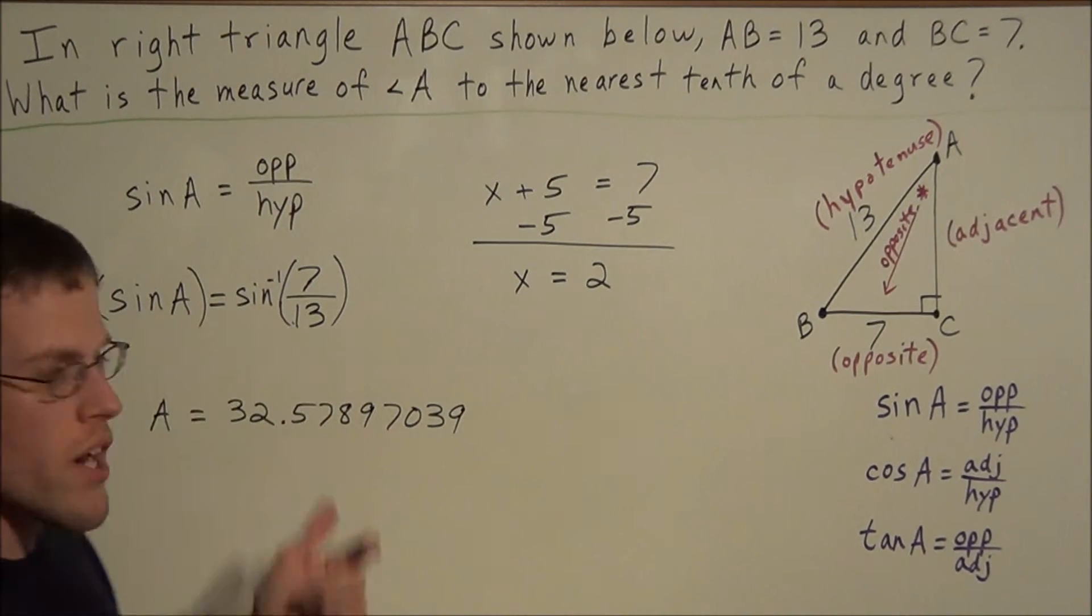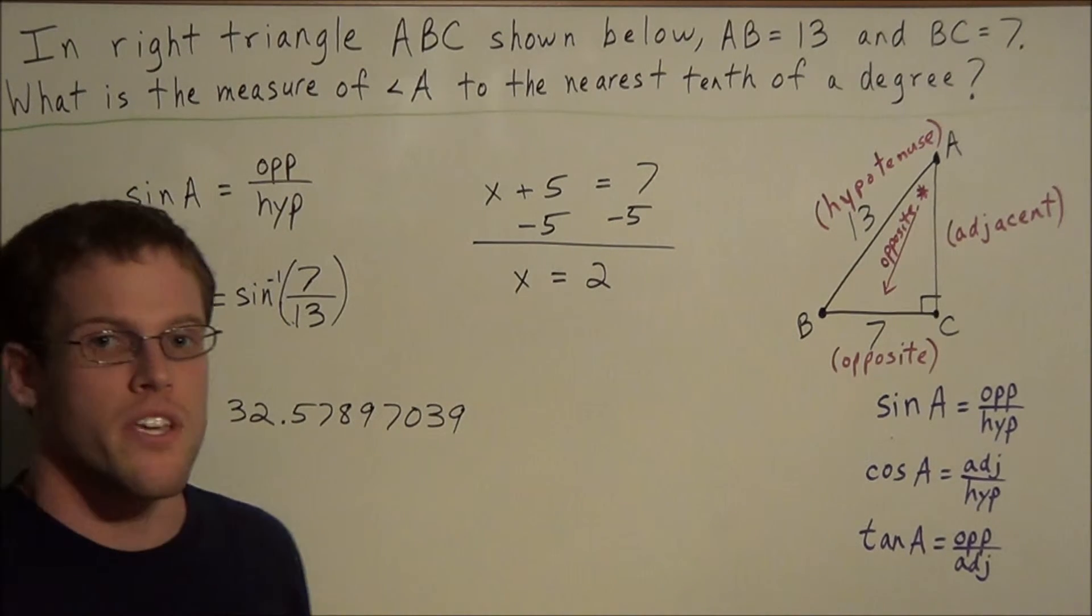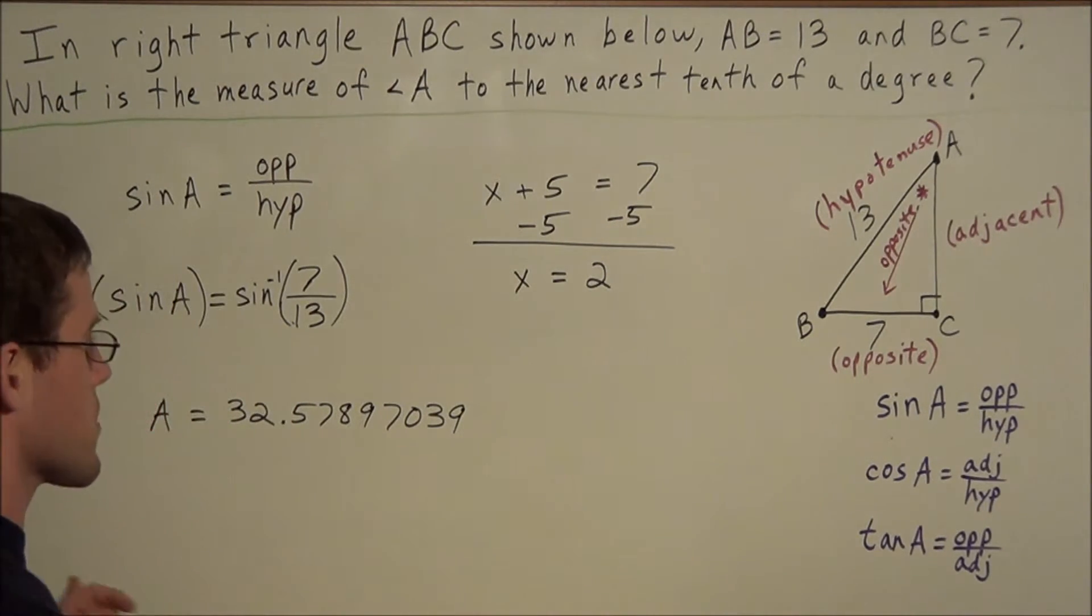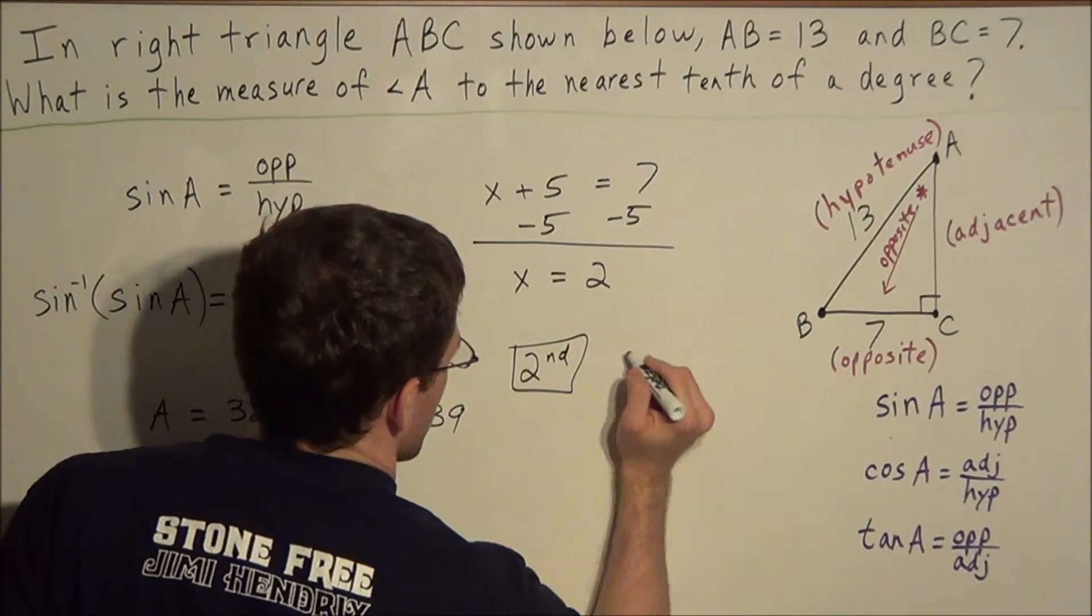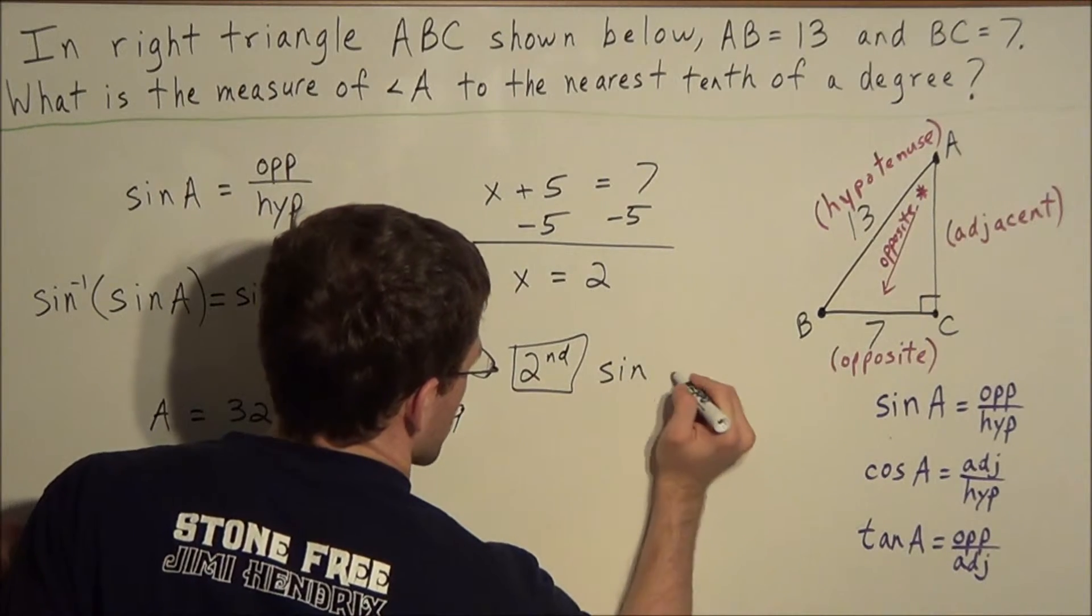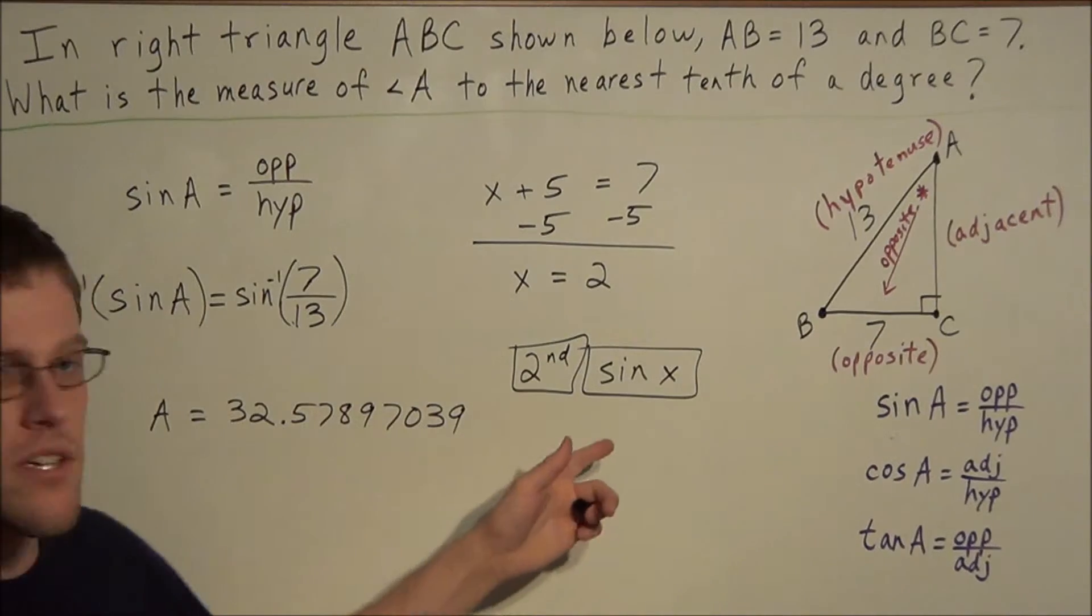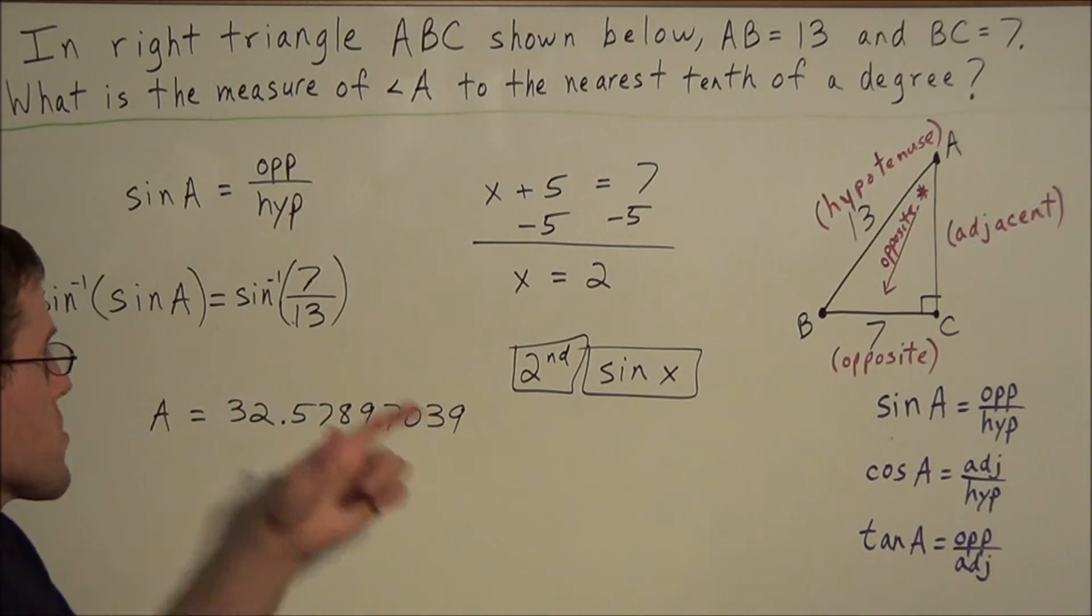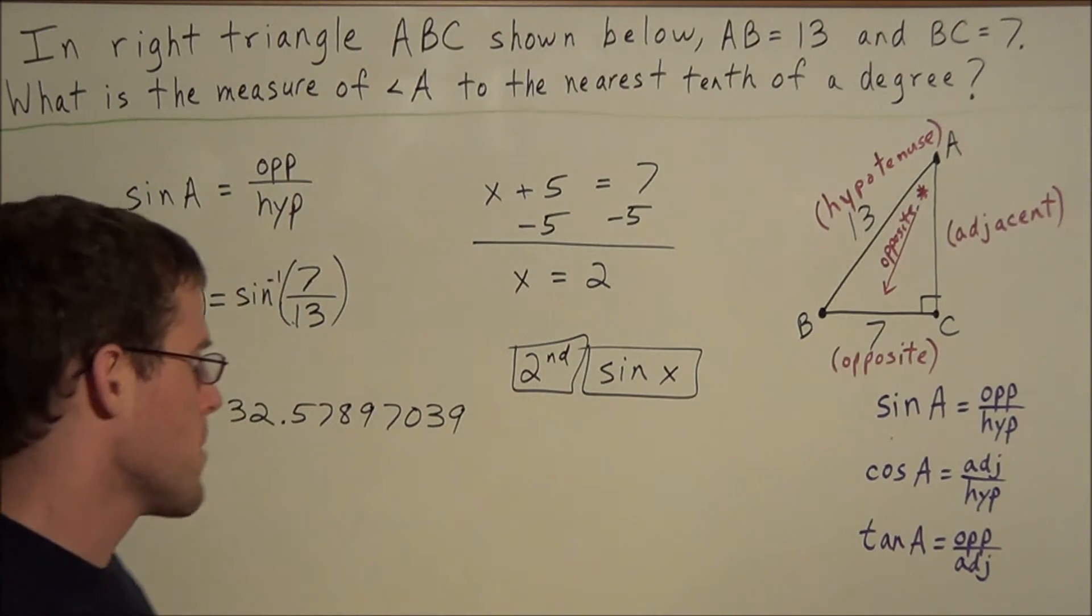And now just in case you're having trouble with the calculator, usually the sine inverse function is underneath the sine function. So you would hit something like second would be the first button you would hit, and then you would hit sine of x. Usually this is how it's laid out on most calculators. So instead of using sine, you would use sine inverse. You would hit second, sine, unless your calculator had a sine inverse button.